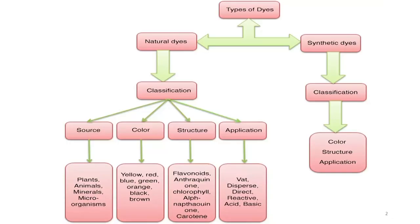Moving on, typical types of dyes come under two categories: one is natural dyes, which we will be discussing in great detail, and the other one is synthetic dyes. We will not go beyond naming synthetic dyes; they also undergo classification according to color, structure and application, but we will be concentrating more on natural dyes and their classification. This classification could be under four headings: from the source, the color that it gives, the structure of the dye molecule, and the application.